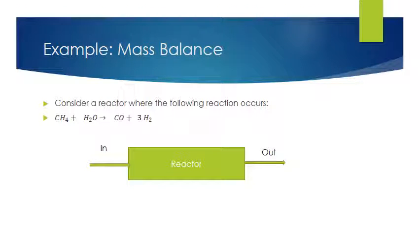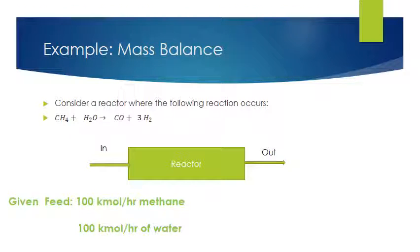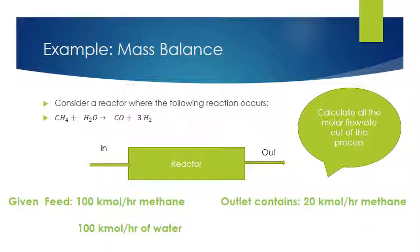Let's try some numbers and see if we can actually do the mass balance. It's a fairly simple concept, but probably one of the most important concepts of chemical engineering. Let's consider our steam methane reformer. We have 100 kilomoles per hour of methane flowing into the reactor and 100 kilomoles per hour of water in the feed. We're given that the outlet contains 20 kilomoles per hour of methane — in other words, not all the methane is converted. We'd like to know the molar flow rates out of the process.